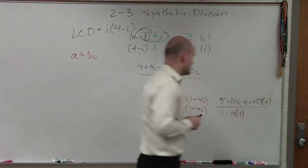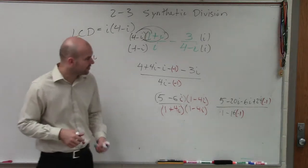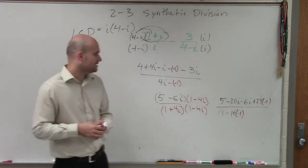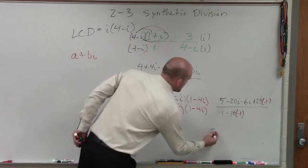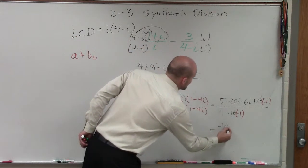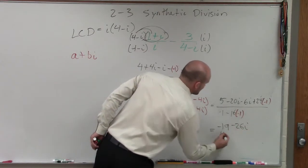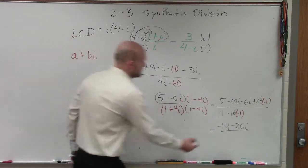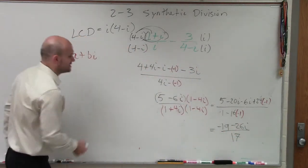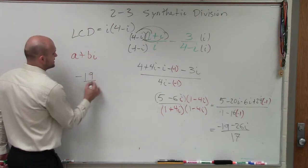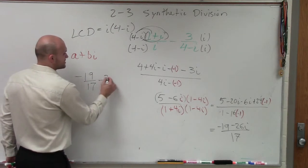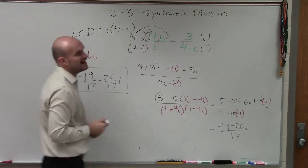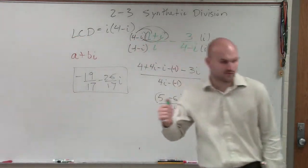So, therefore, now I have 24 times negative 1 is negative 24 plus 5 is going to be a negative 19. I have negative 19 minus 26i all over 1 plus 16 which is 17. However, ladies and gentlemen, we want to write this in our standard form. So, it's going to be a negative 19 over 17 minus 26 over 17i. That would be your final simplified version in standard form.